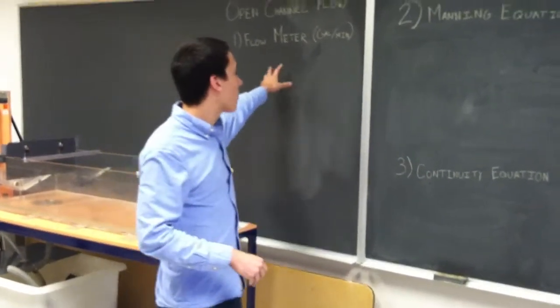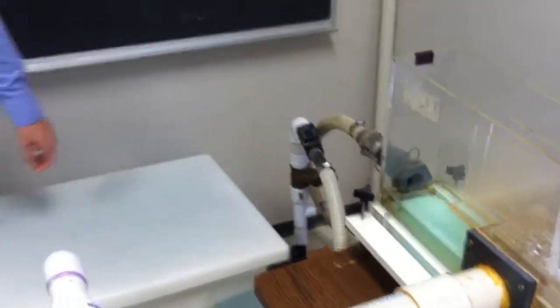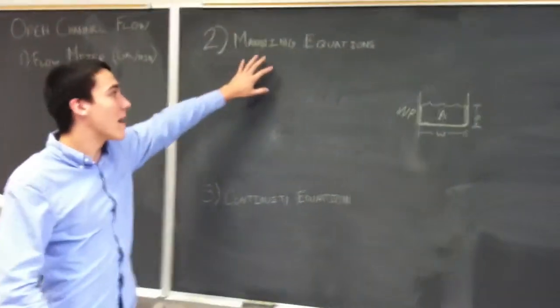The first thing we have is from the flow meter, which is over here, and the rating you'll get off there will be in gallons per minute. So we'll be taking that flow and we can use it in the Manning equation.